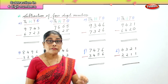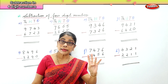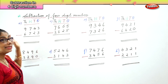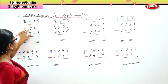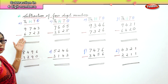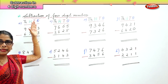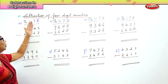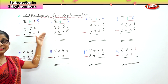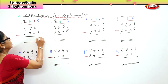We are doing subtraction of four-digit numbers. The place values are 1, 10, 100, and 1000. The first sum is 9,743 take away 6,723. We will go by place value. First we go to the ones place before we subtract. Three ones take away three ones — three take away three is zero.